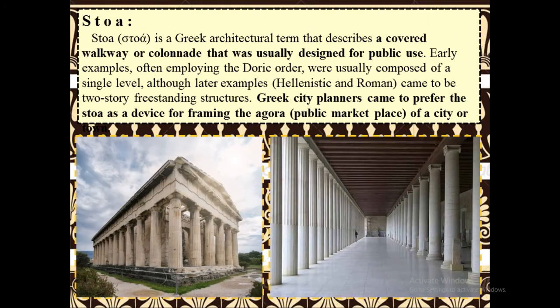The stoa is a Greek architectural term that describes a covered walkway or colonnade usually designed for public use. Early examples were usually composed of a single level, although later Hellenistic and Roman examples came to be two-story freestanding structures. Greek city planners came to prefer the stoa as a device for framing the agora, or public marketplace, of a city or town.